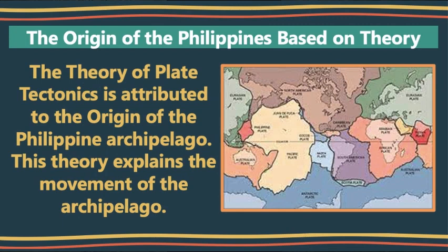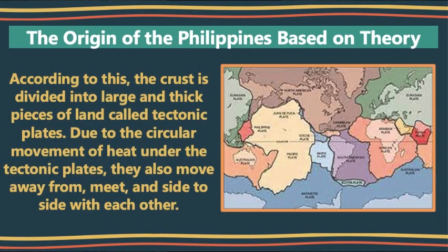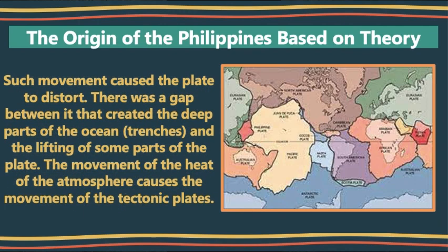This theory explains the movement of the archipelago. According to this, the crust is divided into large and thick pieces of land called tectonic plates. Due to the circular movement of heat under the tectonic plates, they also move away from, meet, and side to side with each other. Such movement caused the plates to distort.